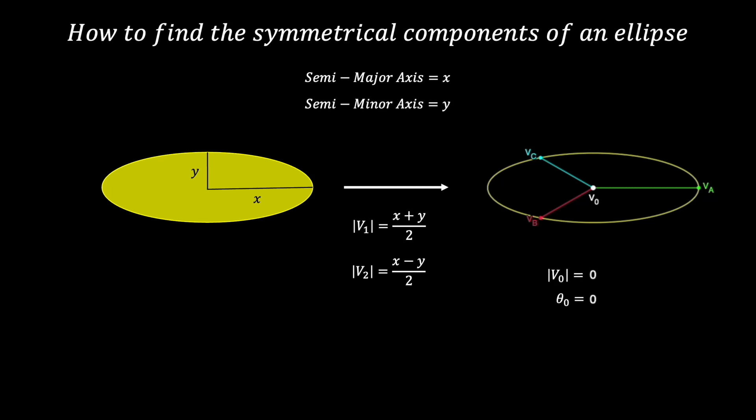Adding a zero sequence component doesn't affect the ellipse, since all it does is shift the whole shape across the plane. For further explanation on that, see my video link in the description.